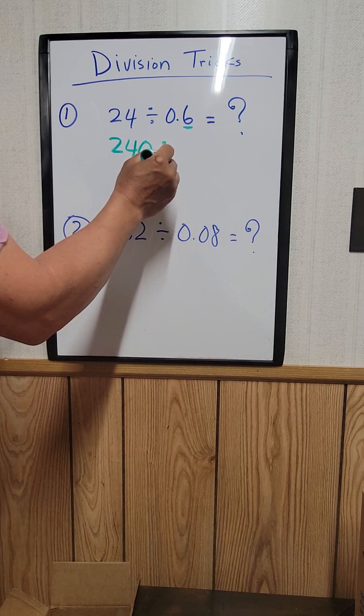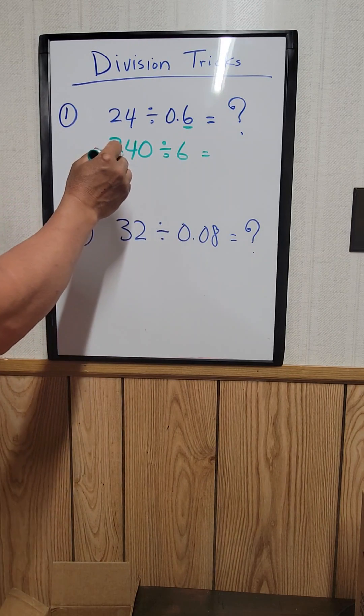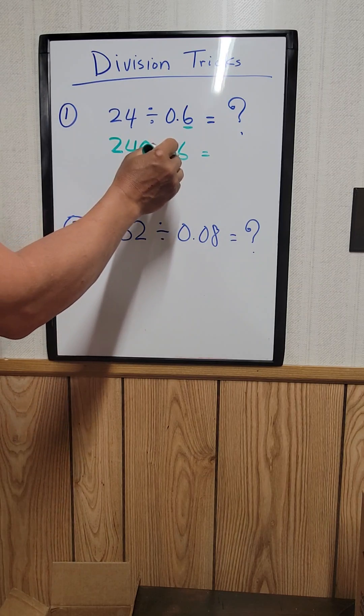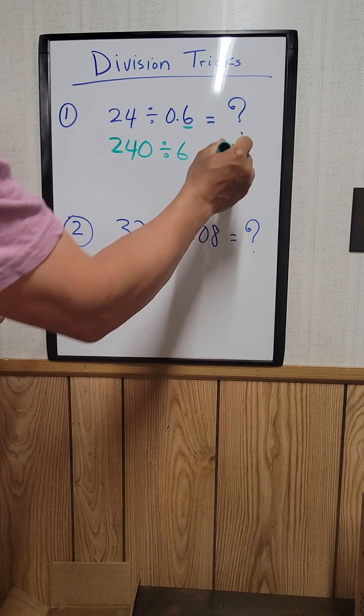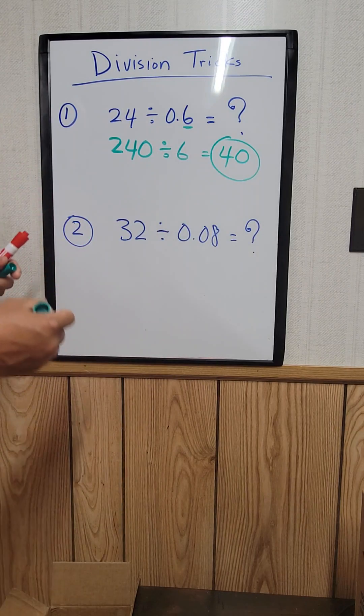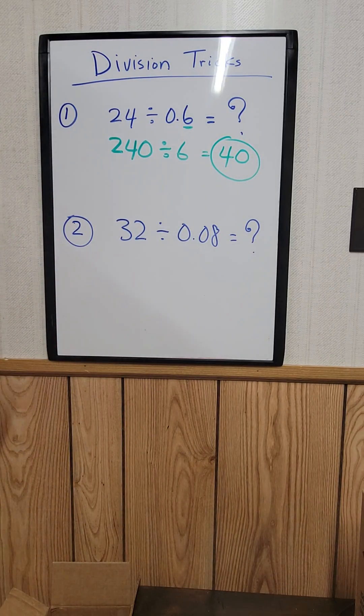Then divide by 6. You know 24 divided by 6 equals 4, then just add the zero to get 40—that's the answer. It's faster doing it this way. For the second one,